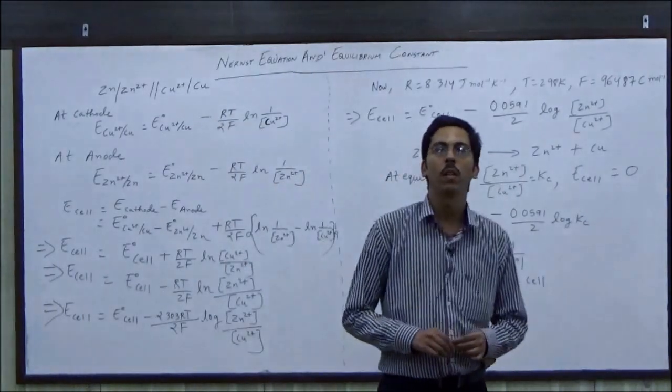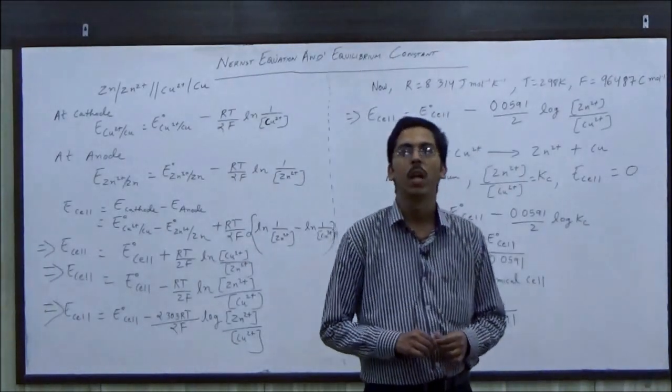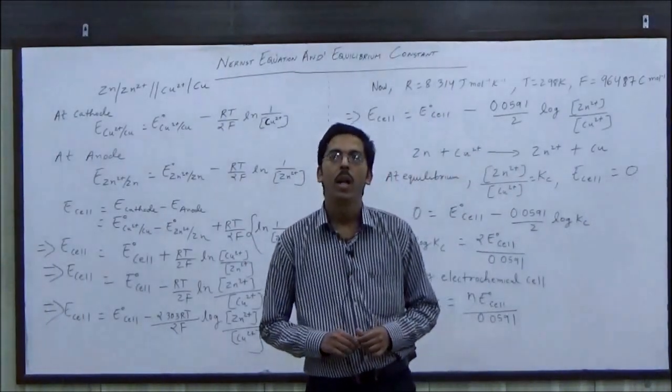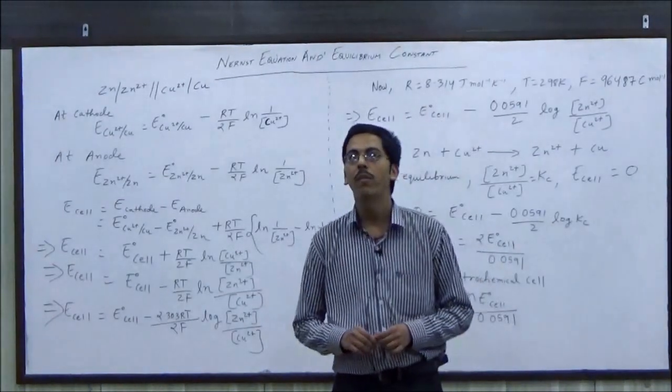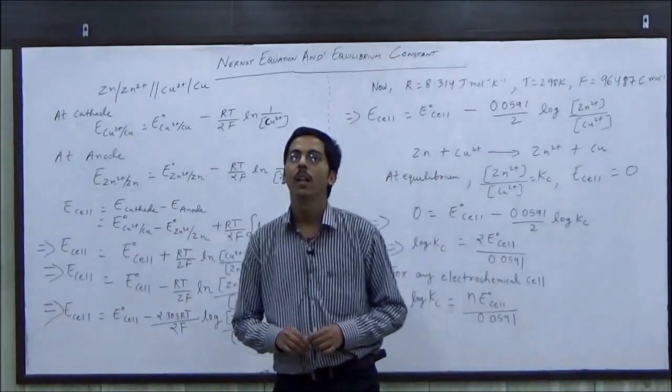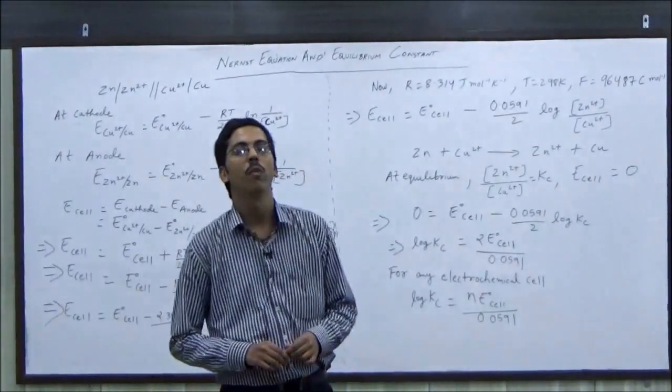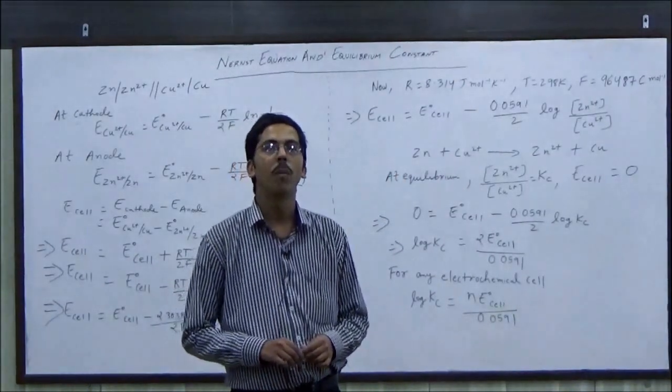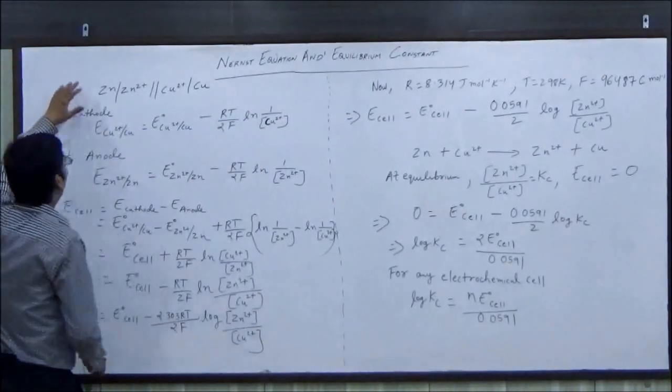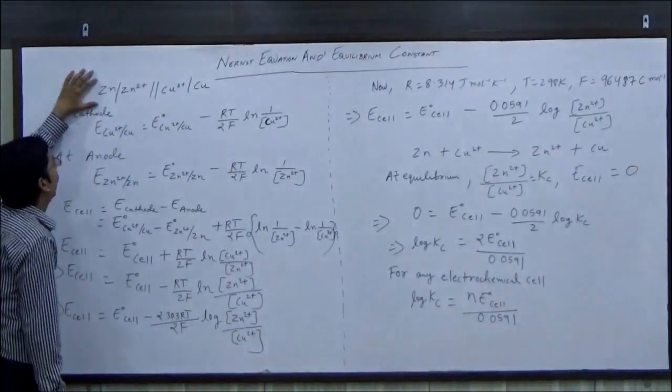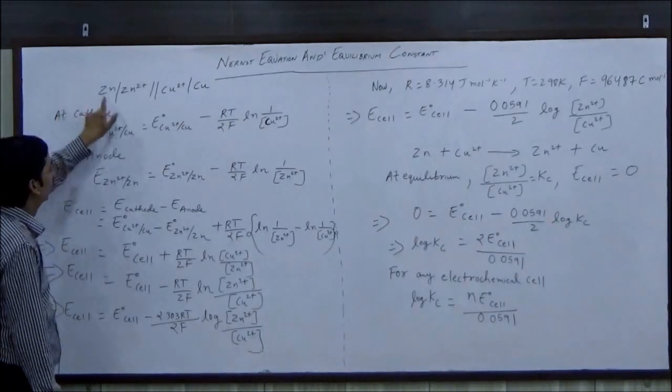Daniel cell consists of two compartments, anode and cathode. Anode compartment consists of zinc metal electrode in zinc sulfate solution and cathode compartment consists of copper electrode in copper sulfate solution. So the net reaction which occurs in Daniel cell can be represented as this.